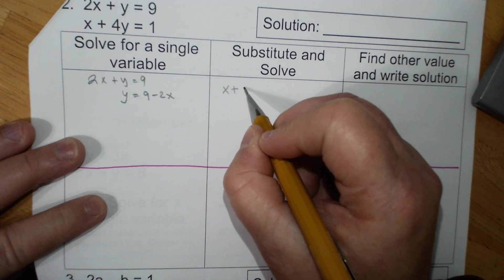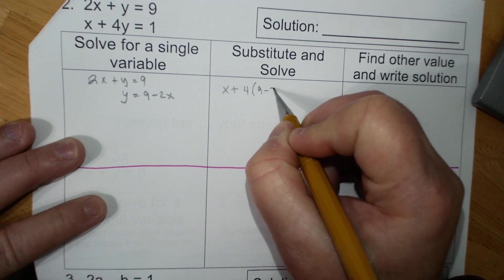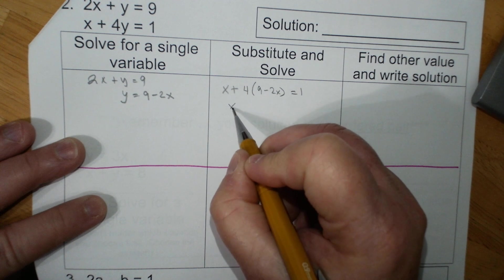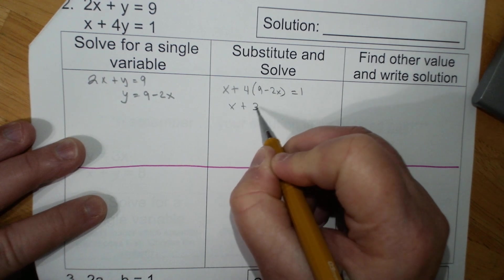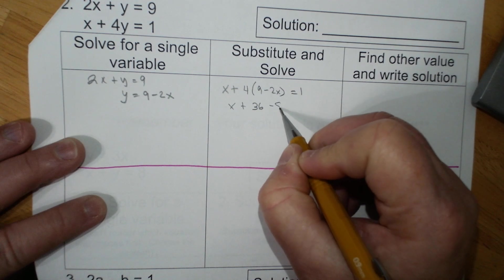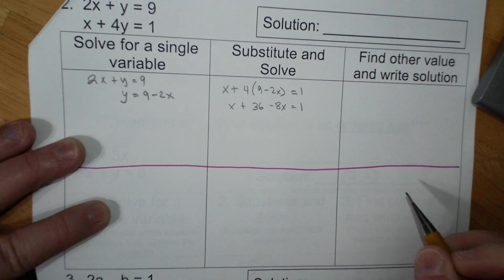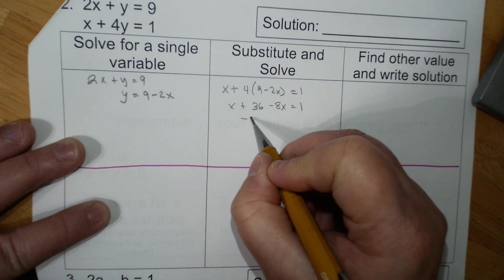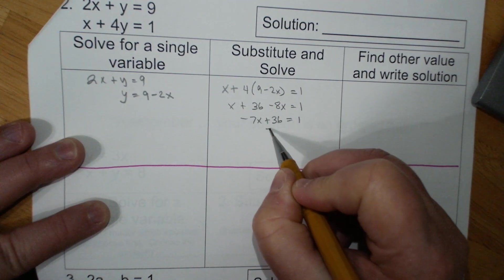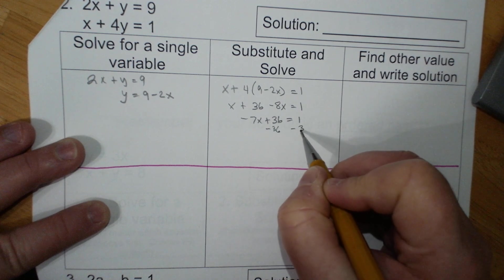x plus 4 times 9 minus 2x equals 1. x plus 36 minus 8x equals 1. Negative 7x plus 36 equals 1 minus 36 minus 36.